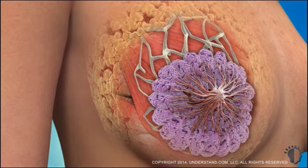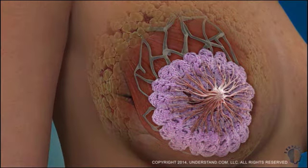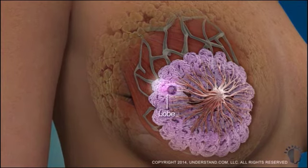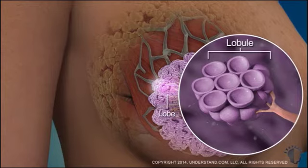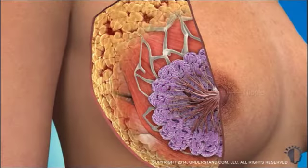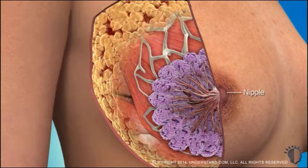The mammary glands are divided into units called lobes, and each lobe is comprised of many smaller bulb-shaped lobules that can produce milk. Milk ducts connect the lobules to the nipple, where the milk exits when a woman is lactating.